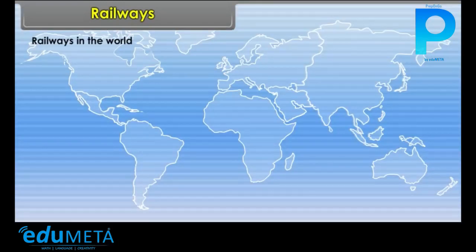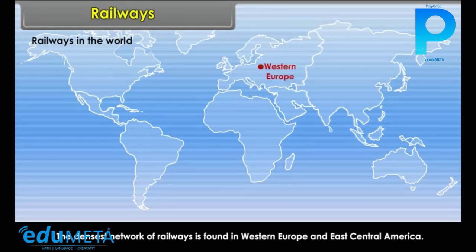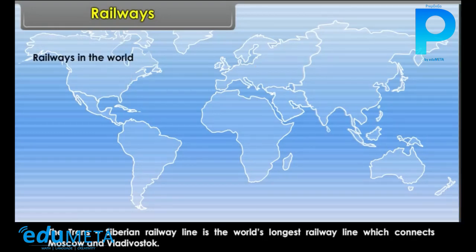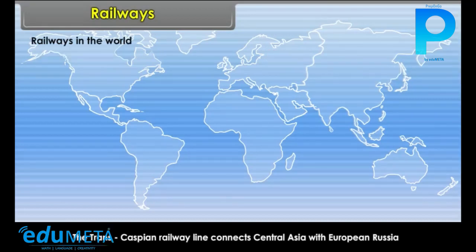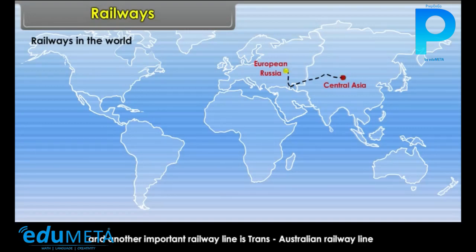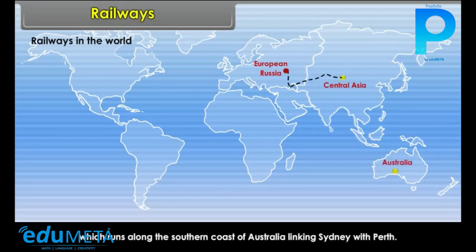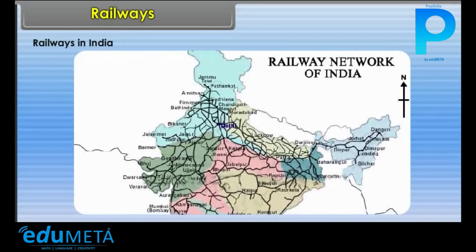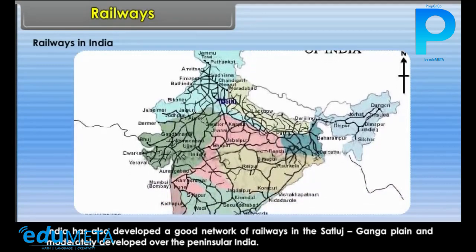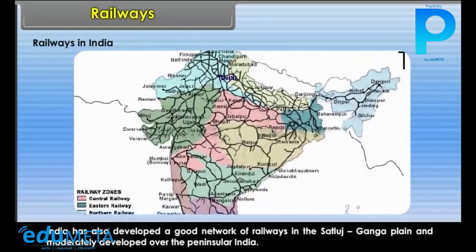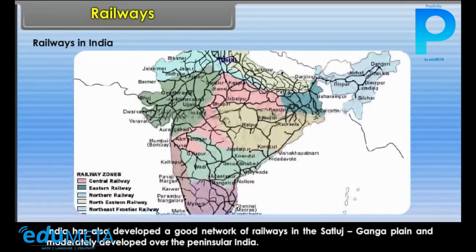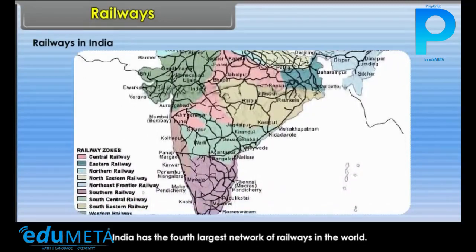Railways in the World: The densest network of railways is found in Western Europe and East Central America. The Trans-Siberian Railway Line is the world's longest railway line, connecting Moscow and Vladivostok. The Trans-Caspian Railway Line connects Central Asia with European Russia, and another important line is the Trans-Australian Railway Line, which runs along the southern coast of Australia, linking Sydney with Perth. Railways in India: India has a good network of railways in the Sutlej-Ganga Plain and is moderately developed over Peninsular India. India has the fourth largest network of railways in the world.